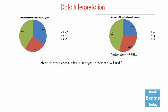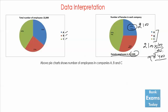First of all, if 25% is 2100, then what would be 100%? That becomes 8400. So there are 2100 females in company A and total females across companies A, B, and C is 8400. Now, what is the number of females in company B? That would become 8400 multiplied by 30 over 100.